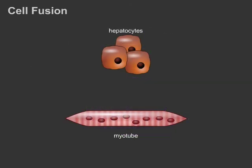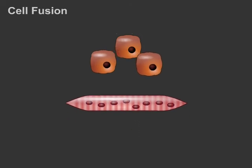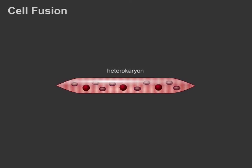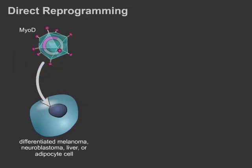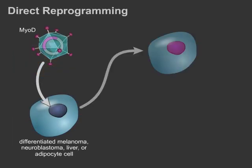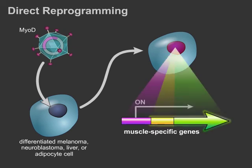Heterocaryons and hybrids have also been generated by the fusion of two somatic cells. When hepatocytes are fused with myotubes, non-muscle nuclei in the resulting heterocaryons express muscle genes, indicating that the muscle phenotype is dominant. Currently, low reprogramming efficiencies and high DNA ploidy of hybrid cells limit the clinical applications of cell fusion. Liver cells, as well as other cell types, have also been redirected to a muscle-like transcriptional program through forced expression of the muscle transcription factor MyoD.